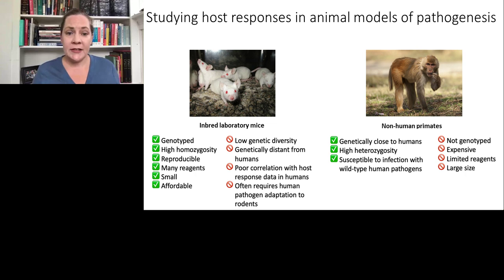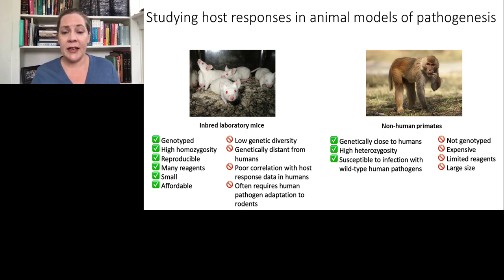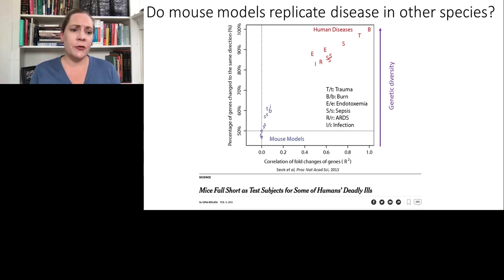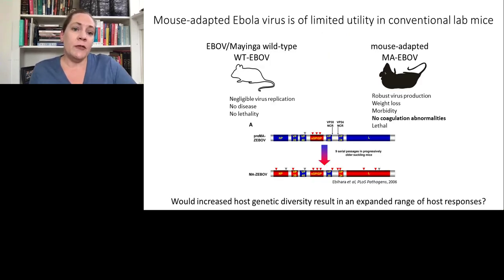On the right we have non-human primates — most commonly the rhesus macaque — used to study virus pathogenesis. These are genetically much closer to humans and are highly genetically diverse. They're also susceptible to infection with wild-type human pathogens in many cases, but they're not genotyped. There are limited reagents to look at their immune systems, and they're much larger, which can be a problem when working with highly pathogenic viruses requiring higher levels of biocontainment. Furthermore, in 2013 a study showed that host response data from C57 black 6 mice did not correlate with host response data from human diseases for a number of different inflammatory conditions, including infection. So people thought that mice may not be the best model for looking at host responses. Mouse-adapted Ebola virus — there is a mouse model for Ebola using a mouse-adapted virus — is of limited utility in these lab mice.